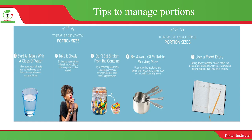Six, take it slowly — sit down to meals with no other distractions. Eating slowly regulates portion control. If I'm going to eat, I need to be relaxed and concentrated. If there are distractions around me — on the computer, talking — I'll not be able to eat the desired amount and may lose appetite. So before you go to eat, prepare your mind that you're going to eat, take it slowly, and don't be in a hurry.